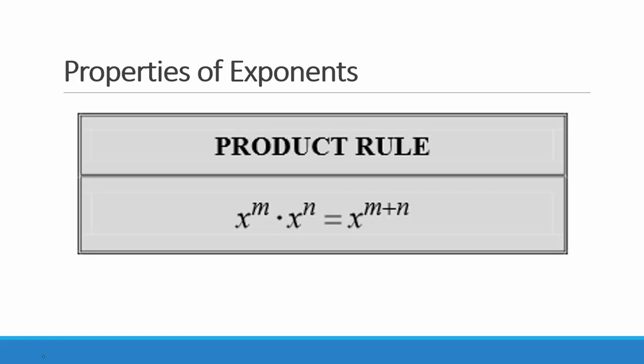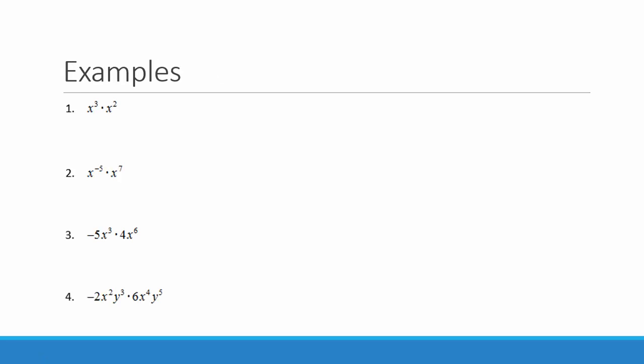The product rule: when we multiply like bases, we add the exponents. So if we multiply x to the m times x to the n, it equals x to the m plus n. Let's see why this property works.